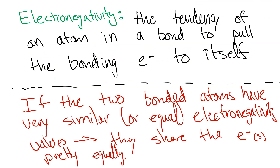Electronegativity difference is calculated between two bonded atoms. You don't do this for just two atoms at random — if they are not directly in a bond with each other, it is pretty much meaningless generally, because remember the definition goes back to 'in a bond.'